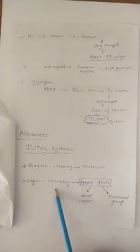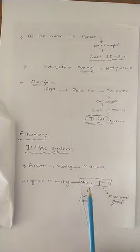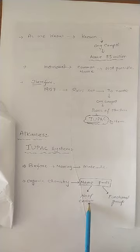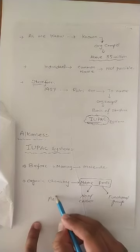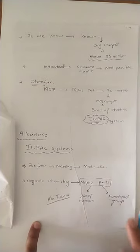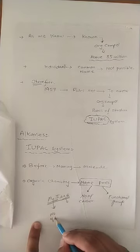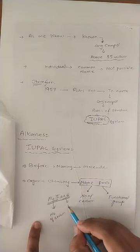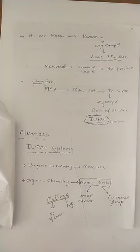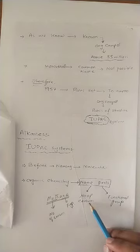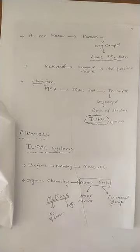Ab hum start lenge alkanes ki IUPAC system se. Toh ya organic compounds ya alkanes ko naam dene se pehle, aap log yaad rakhiye ki organic chemistry mein naam ke hamesha do parts hote hain. Ek molecule ke jitne naam hote, uske two parts hote hain. Ek naam, usko wo represent - naam ka ek hissa represent karta hai number of carbon atoms ko, jabke dusra part represent karta hai functional group ko. For example, methane. Toh is naam ke two parts - ek meth, aur dusra ane. Toh meth represent karta hai one carbon atom ko, aur ane represent karta hai functional group ko.